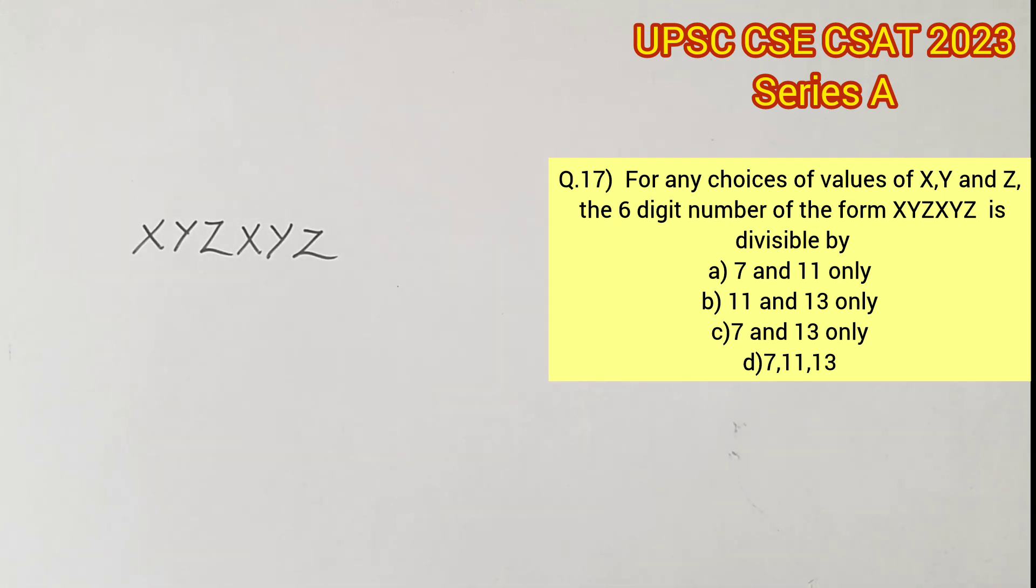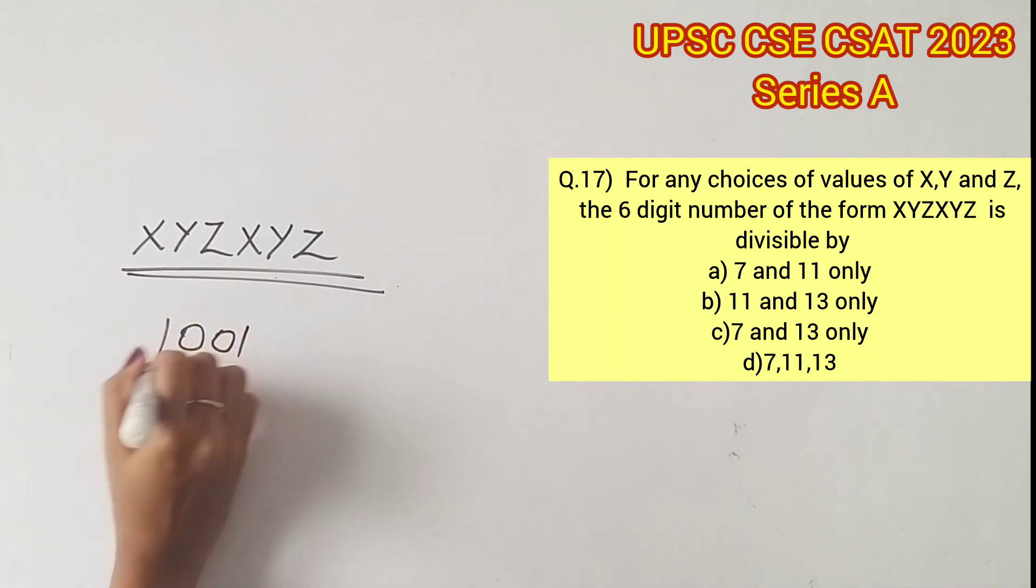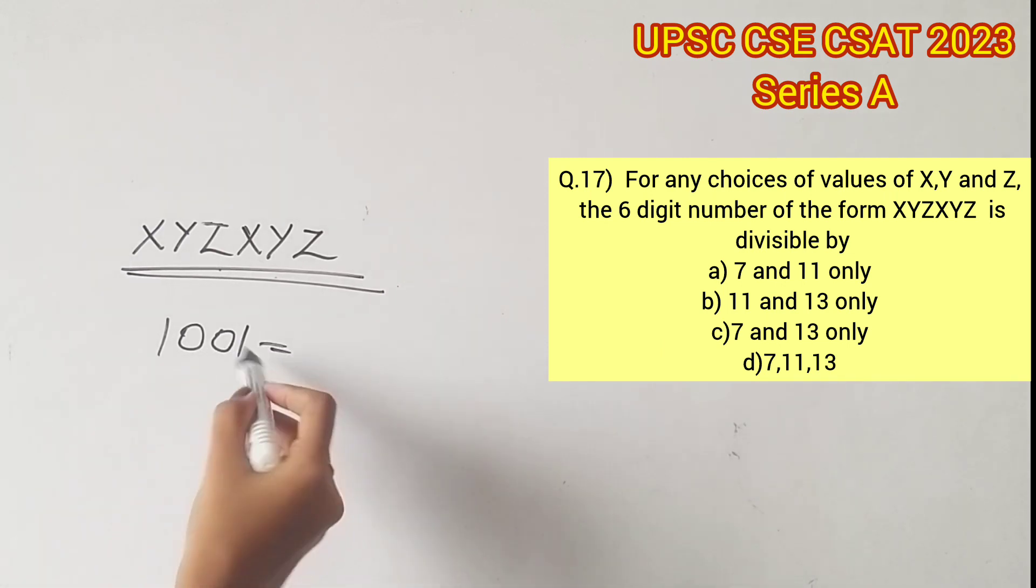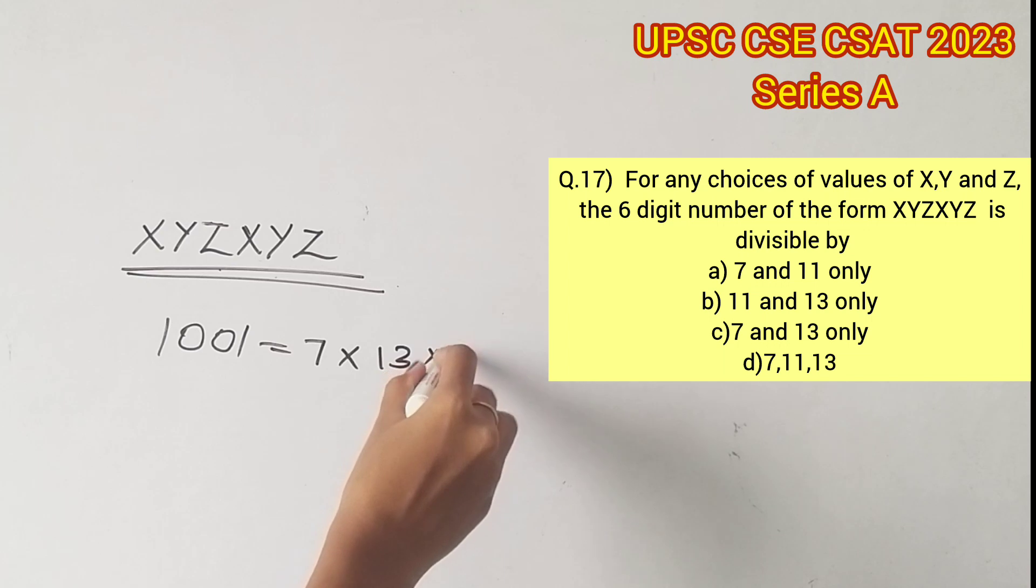There is actually a proof where a six-digit number formed by XYZXYZ is divisible by 1001 for any values of X, Y, and Z. And 1001 in turn is the product of 7, 11, and 13. Now if you knew this proof already, well and good, you can arrive at the answer in seconds.